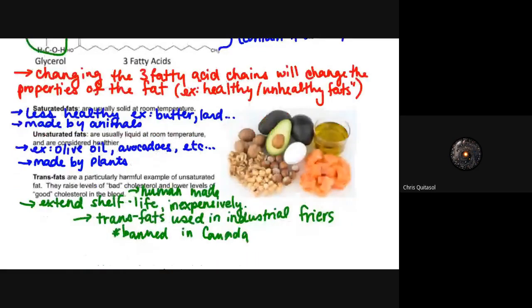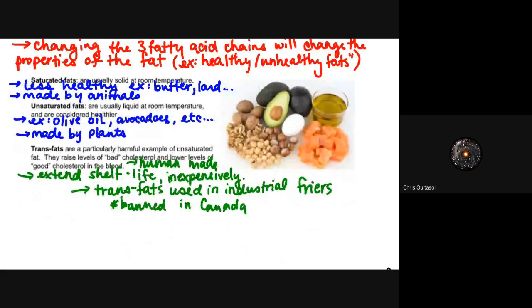And then finally the trans fats, which are a particularly harmful type of unsaturated fat. They can raise what's called the bad cholesterol and lower levels of good cholesterol in most animals but specifically in humans. They help extend shelf life and they tend to be quite cheap, so trans fats are usually used in industrial fryers and they're usually put into some foods. However, it is banned in Canada. So it's quite an interesting thing that something as simple as a trans fat, which is naturally produced in some cases, can be banned as a result of its unhealthy side effects because they tend to be quite unhealthy for you when consumed in large quantities.